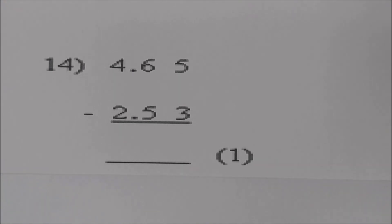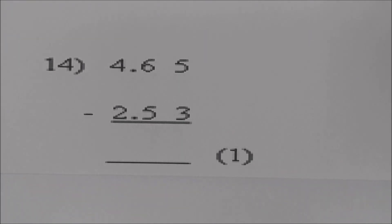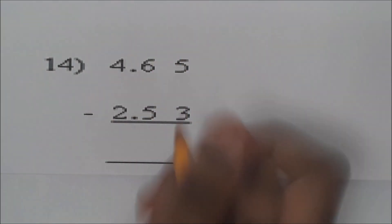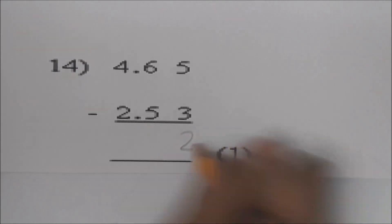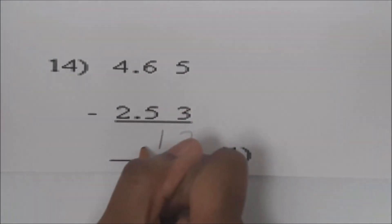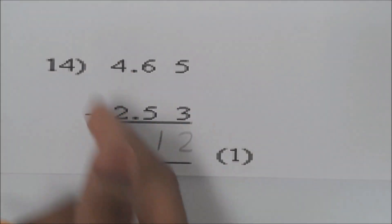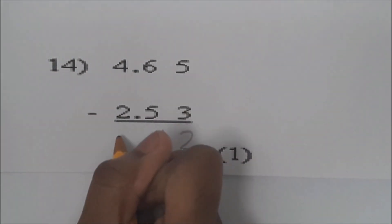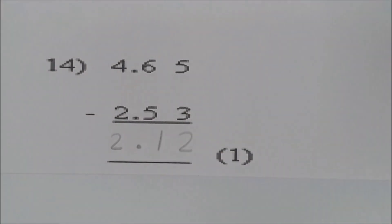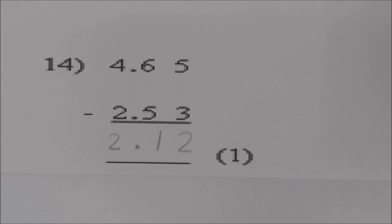Number 14. We're going to subtract 4.65 minus 2.53. 5 minus 3 is 2. 6 minus 5 is 1. Add the decimal. 4 minus 2 is 2. The answer is 2.12. Very good.